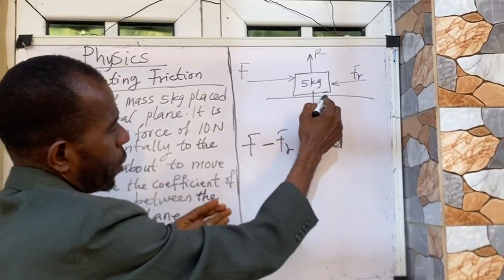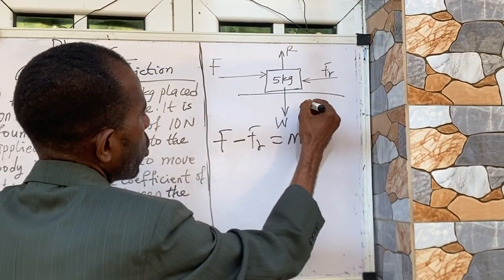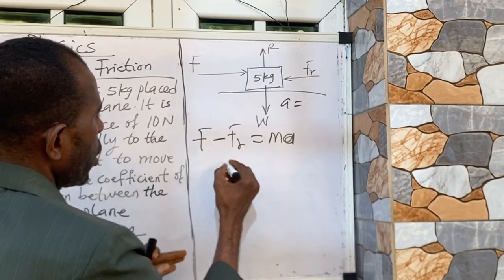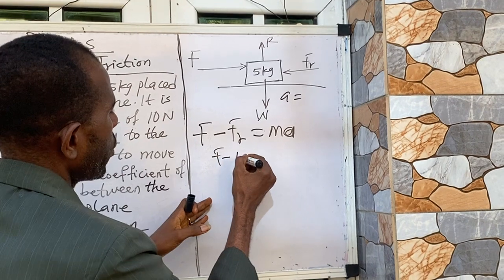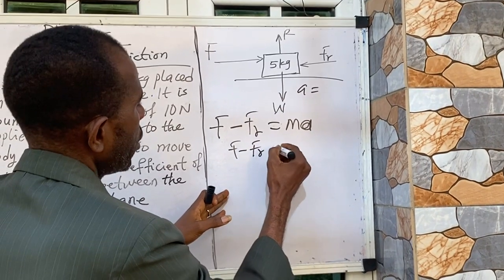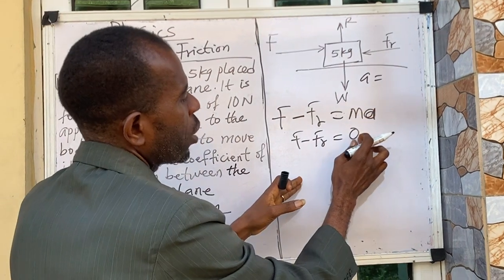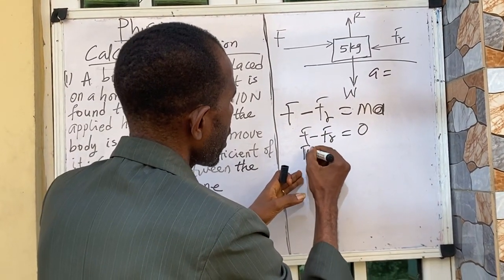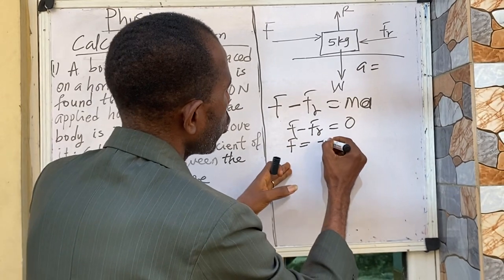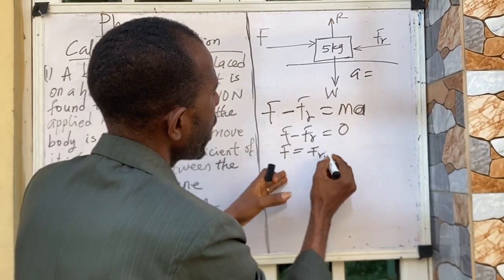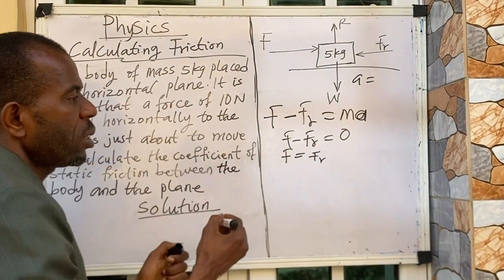But in this case acceleration here is zero, which means here I'm going to have F minus Fr equal to zero, because mass times zero here is going to give me zero. So in this case, this F that we are talking about here is equal to the frictional force. So they are the same.